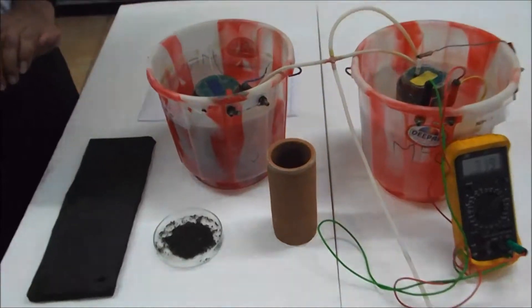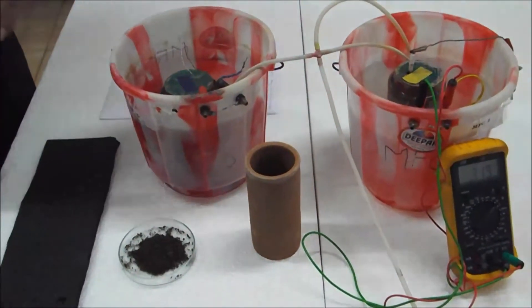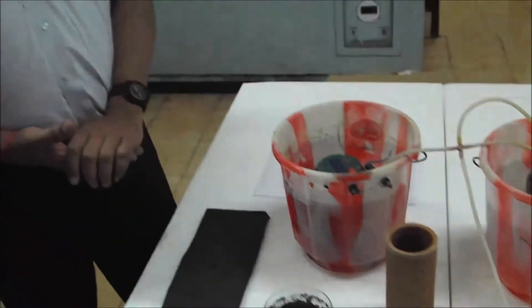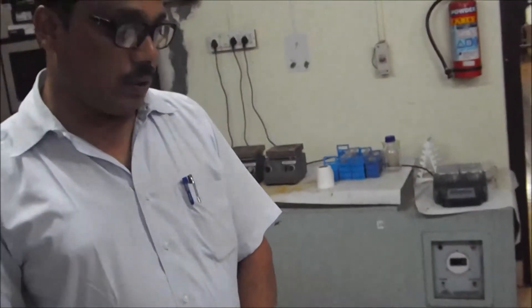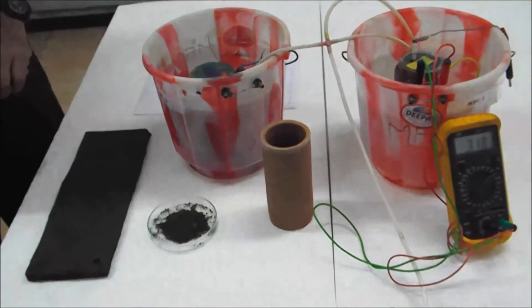The problem faced by the microbial fuel cell is, with the duration of operation, the methanogenesis dominates in the microbial fuel cell. And that reduces the availability of electrons from the oxidation of the substrate.